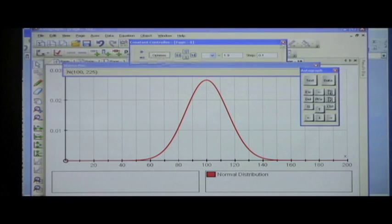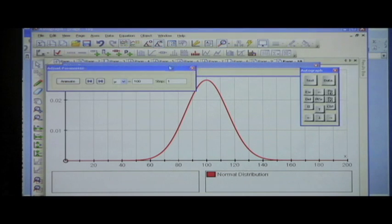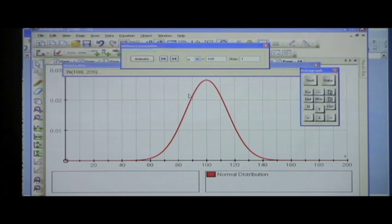But it's quite an interesting distribution, this, because once again we can look at the animation of this and say, what would happen if we made mu bigger than that? The whole thing is just going to march to the right, isn't it? It's just a simple translation.